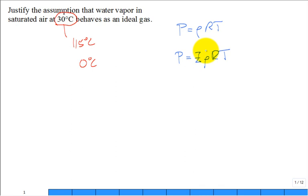There are a couple of ways of doing this. You could predict the specific volume, which equals RT divided by P using the ideal gas equation, and then compare that to the specific volume of saturated vapor from the tables - like Table A-2, our steam table. Is this reasonable?